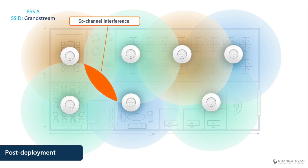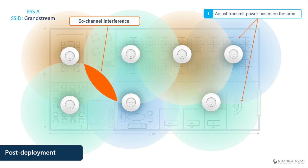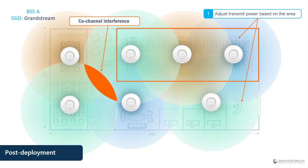One obvious issue is co-channel interference, which results from two overlapping access points transmitting over the same channel. Channel numbers are represented with colors for easy understanding. The problem is that devices connected to these two APs will be competing for the same wireless medium, which can negatively impact Wi-Fi performance. One approach to fix this is to ensure the transmission power of the APs does not extend beyond the desired area — especially in small areas with multiple APs such as a call center with three APs deployed.